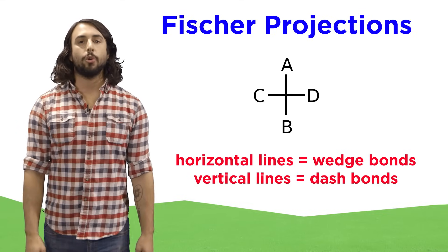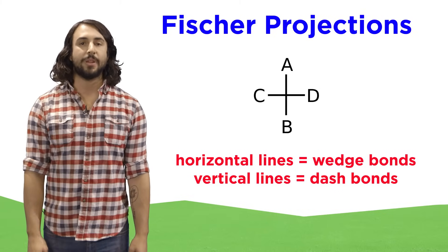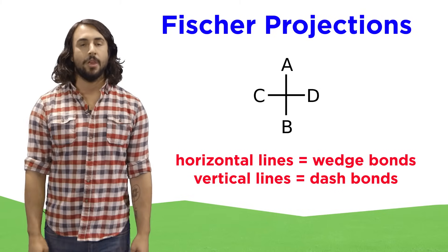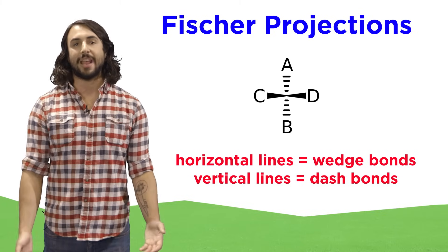With Fischer projections, horizontal lines are implied to be wedge bonds, and the vertical lines are implied to be dash bonds. To remember this, just imagine a bow tie on each carbon, like it's going to the chemistry prom.